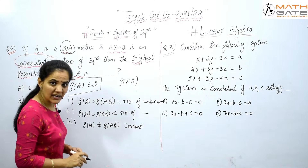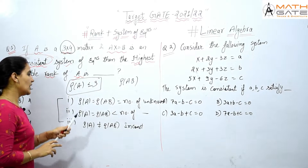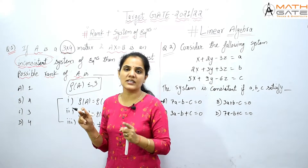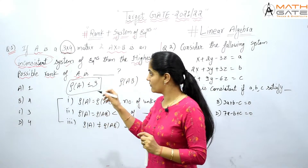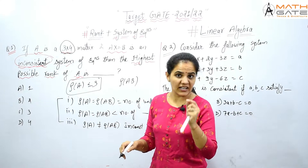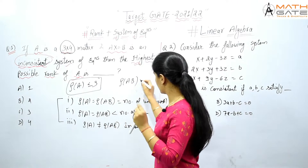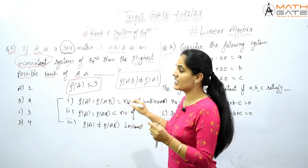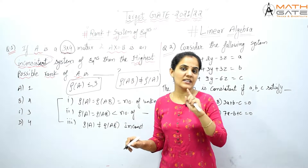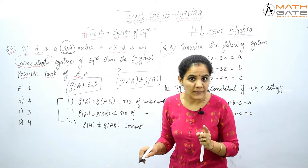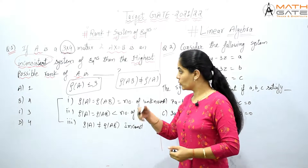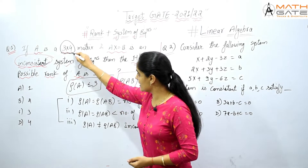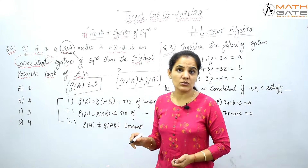We already know this — here is a quick revision. The extra condition given helps us solve this question. The system is inconsistent, which means rank of A is not equal to rank of augmented matrix AB. Matrix A rank is less than or equal to 3.